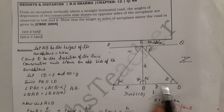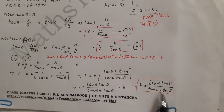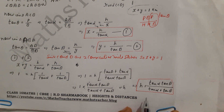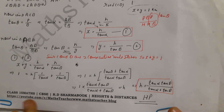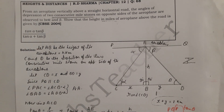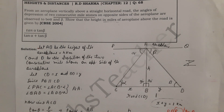So if you know the values of alpha and beta, you can substitute them here and find the height. I hope you understand. If you have any doubts please comment in the comment box. Thank you.